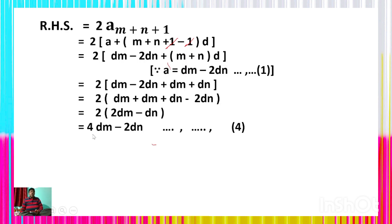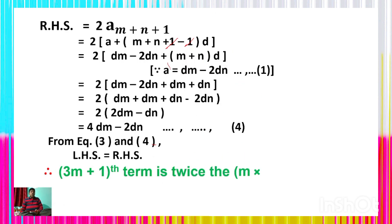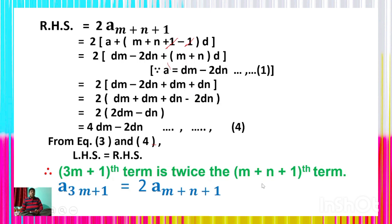From equations 3 and 4, LHS = RHS = 4dm − 2dn. Thus the (3m+1)th term is twice the (m+n+1)th term of the AP. Hence a_(3m+1) = 2 × a_(m+n+1) is proved, based on the concept of arithmetic progression.